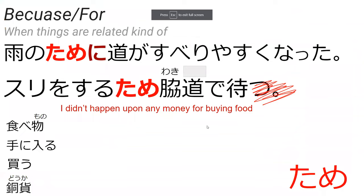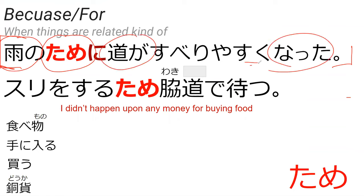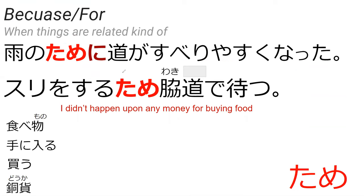Can you read the first sentence for me? 'Ame no tame ni michi ga suberiyasukunatta.' Right, so this means 'because of the rain, the street became very slippery — easy to slip on.' That's an example of tame meaning 'because.'